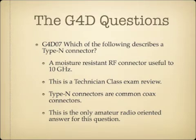Which of the following describes a type N connector? A type N connector is a moisture resistant RF connector useful to 10 gigahertz. This is a bit of a Technician class exam review. Type N connectors are common coax connectors used most often in amateur radio. As far as the possible answers on the exam, the type N connector is the one that has the most to do with amateur radio — the other answers deal with stereo stuff and other things.